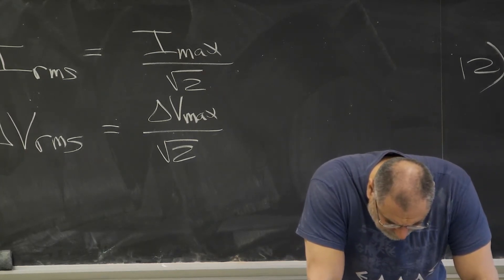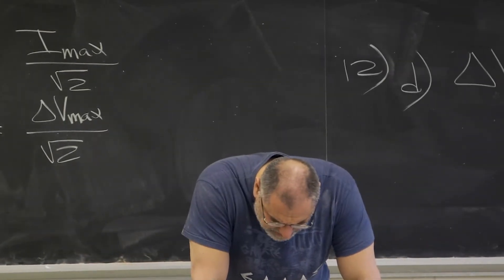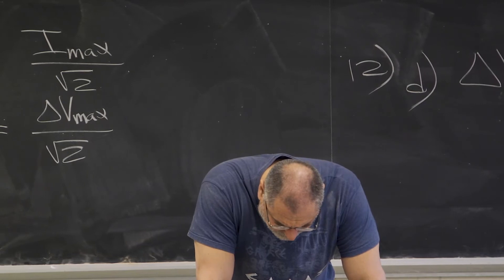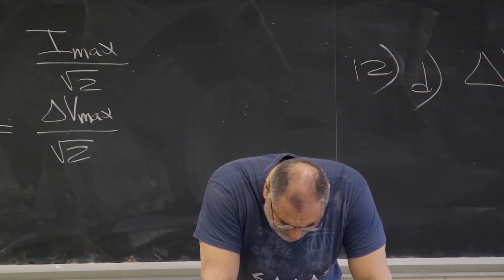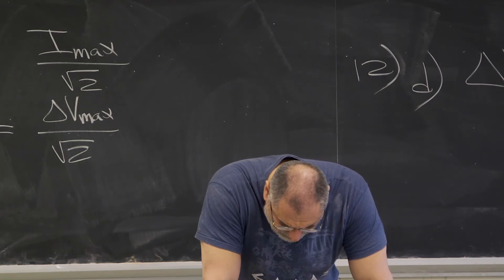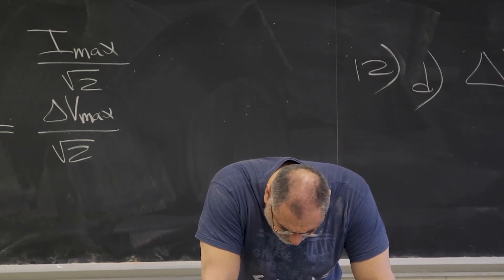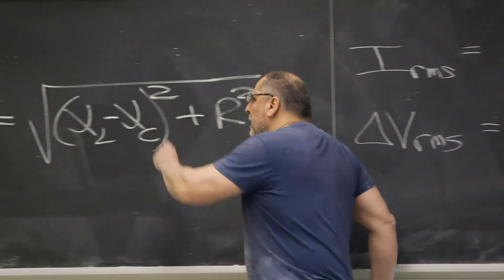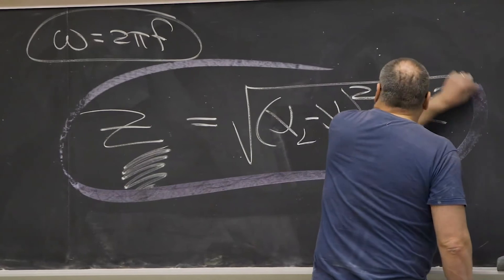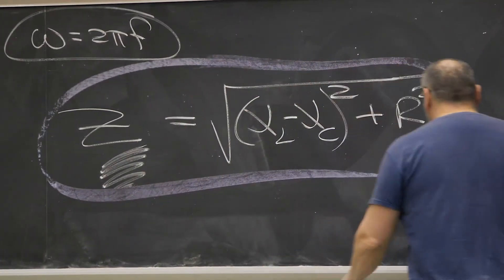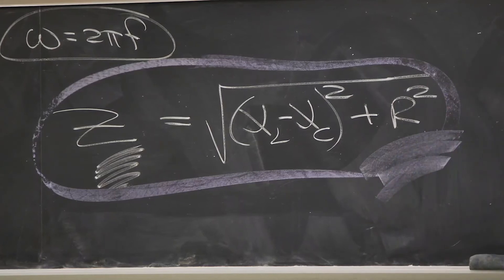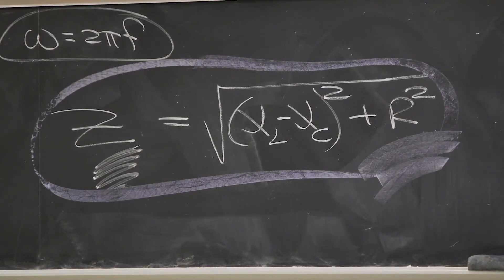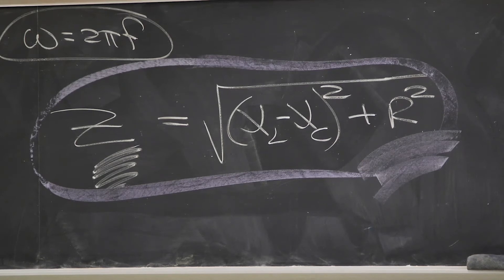Now let's do problem 18. A sinusoidal voltage delta V equals 80 volts times the sine of 150 T is applied to a series RLC circuit with L equals 80 millihenries, C equals 125 microfarads, and R equals 40 ohms. Part A: what is the impedance of the circuit? Part B: what is the maximum current in the circuit?